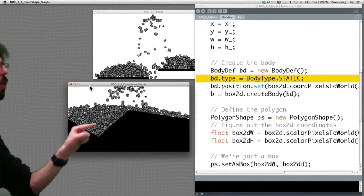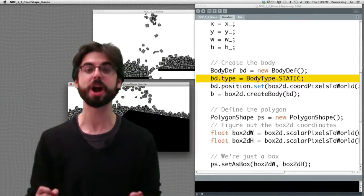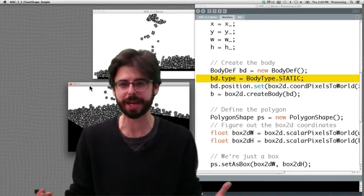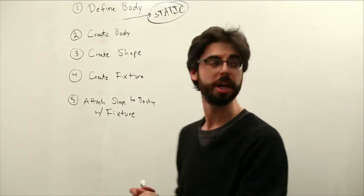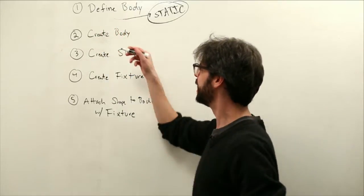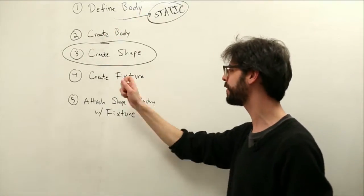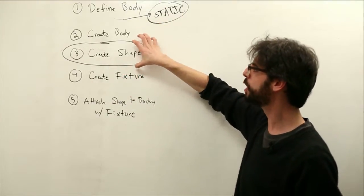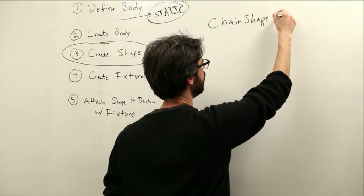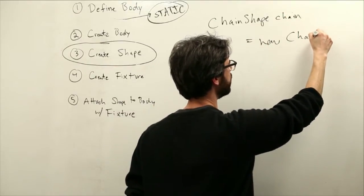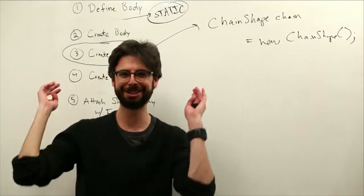For the scenario where you want to make a terrain or chain — an edge, some type of surface that has an edge that cannot be penetrated — this is a static body, but the way it's defined is with a particular kind of shape called a chain shape. We're modifying the create shape step only. Instead of a polygon shape, we use a chain shape.